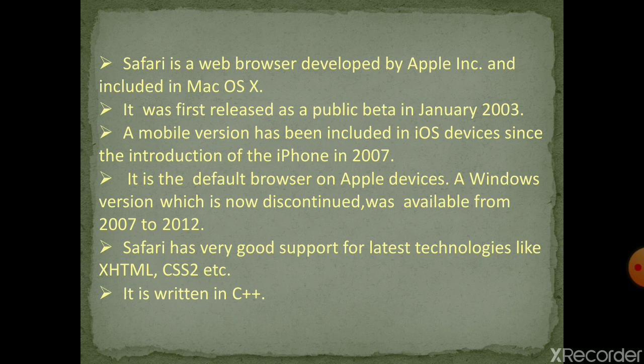A version of Safari for Microsoft Windows was released on 11th June 2007, which supported only Windows XP Service Pack 2 or later. It is no longer being promoted or updated — the last version available for Windows PC is Safari 5.1.7. Safari has very good support for latest technologies like HTML and CSS2 (Cascading Stylesheets 2), and this web browser is written in C++ language.